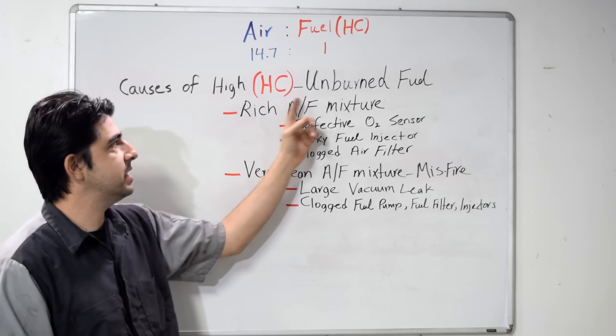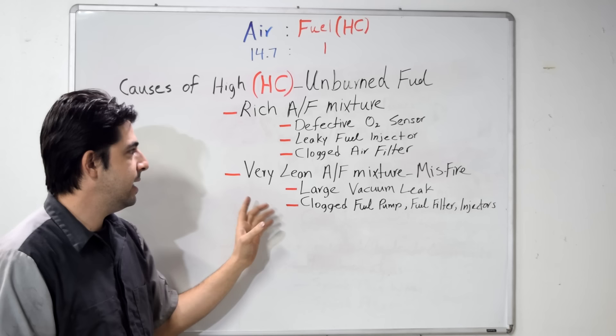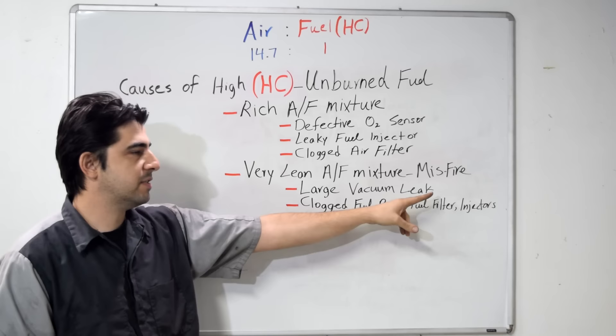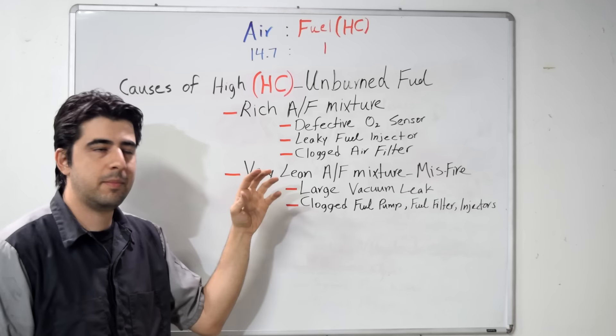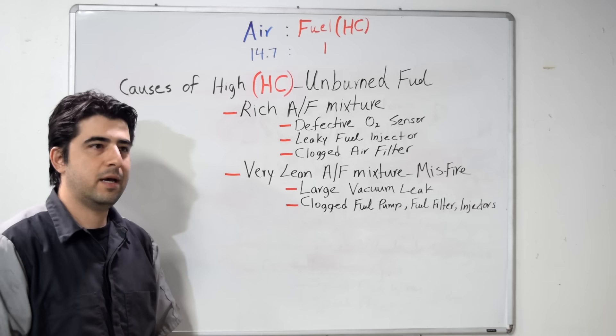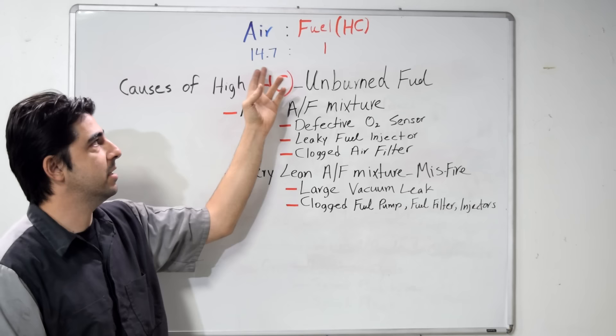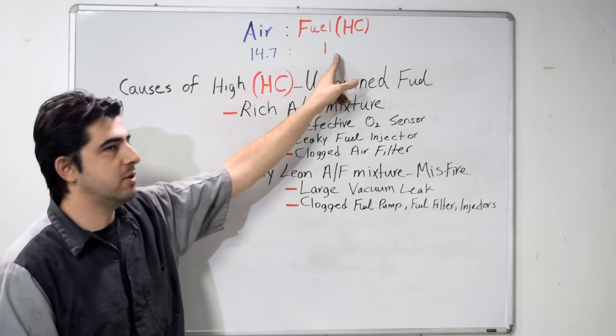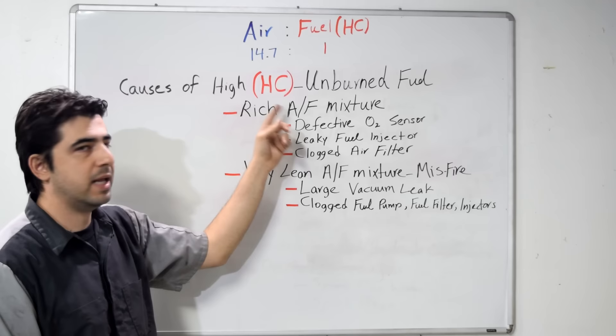Think of HC as unburnt fuel — that's probably the best way to look at it while diagnosing. When you have a very lean air-fuel mixture and it causes misfires, you're basically not burning the HC; it's simply going into your combustion chamber and then skipping out into your exhaust fumes. However, it has to be enough to cause a misfire, because if it's not causing a misfire, you'll just have a lean mixture with a lot of air that burns off all the HC, so there's none left over. It has to cause a misfire in order for you to have an excessive amount of HC.